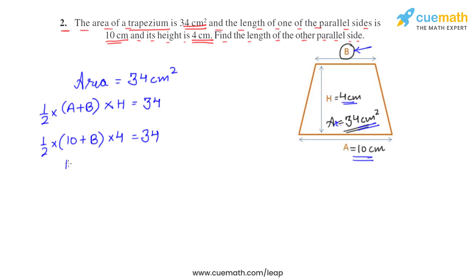So 34 times 1 by 2 becomes 2 by 1 and 4 becomes 1 by 4. When we simplify this, b plus 10 will equal... 2 cancels out with 2 and 34 divided by 2 will be 17.